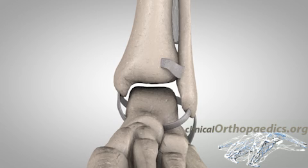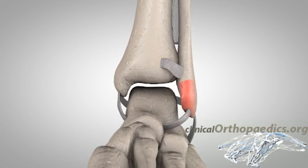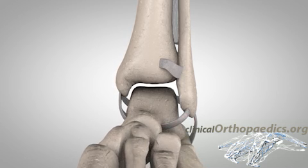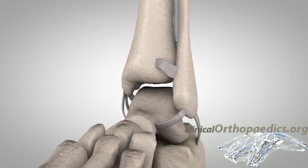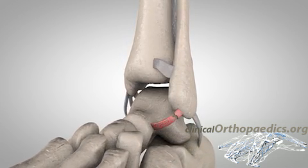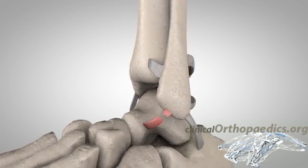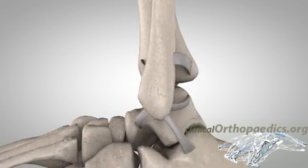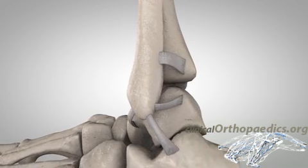The lateral complex lies on the outside of the ankle, consisting of the lateral malleolus and the lateral ligaments. Inversion injuries of the ankle are quite frequent and result in tearing of the lateral ligaments; these injuries involve predominantly the anterior talofibular ligament.